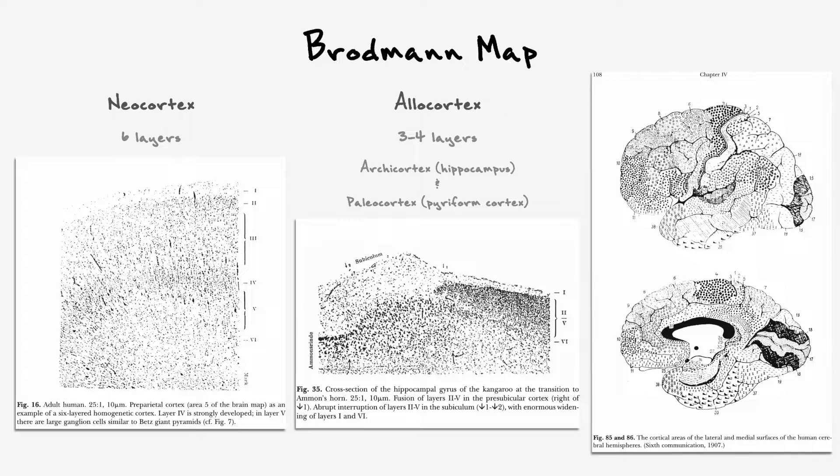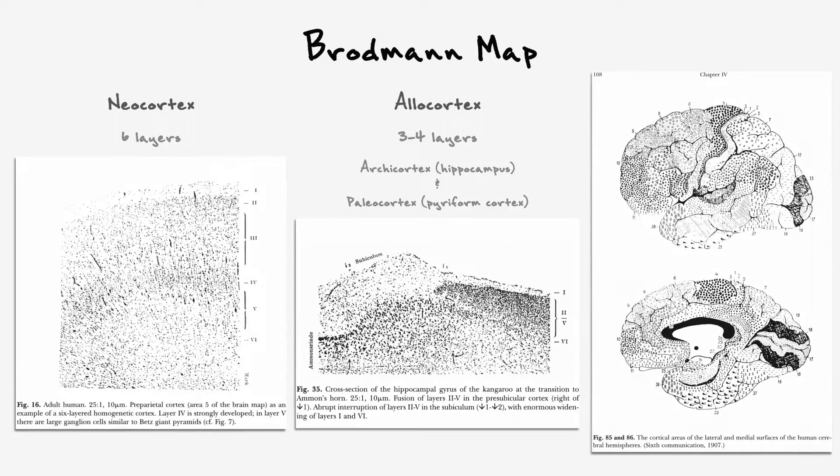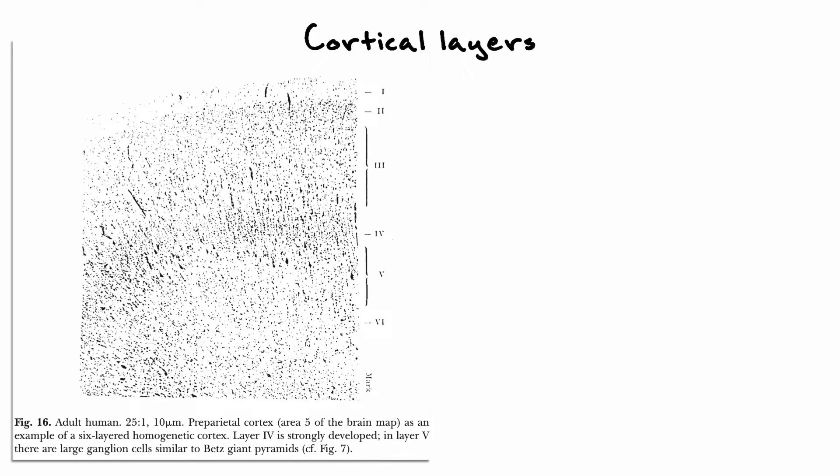Now, with the exception of the areas that I have mentioned that are made of allocortex, the rest of the brain is mostly made of neocortex, and for that reason, we will mostly focus on it to build our intuition on the cortex.